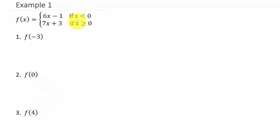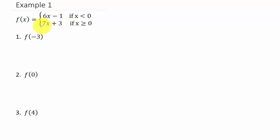Basically, if we're taking an x value that's less than 0 and evaluating the function, we're going to plug it into 6x minus 1. If the value we're plugging in for x is greater than or equal to 0, we're going to plug it into 7x plus 3.